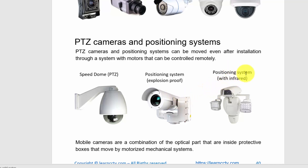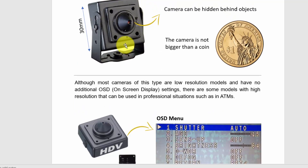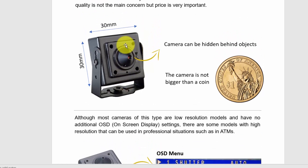You also have the positional system with infrared, where the camera goes inside like a robot and you can attach infrared illuminators. Moving on, here I have a small micro camera or mini camera — as you can see, it's not bigger than a coin, and inside the camera are the lenses.